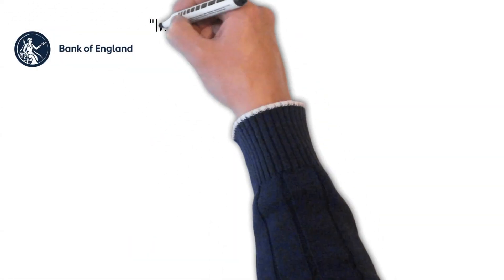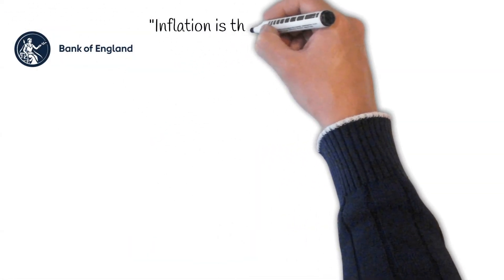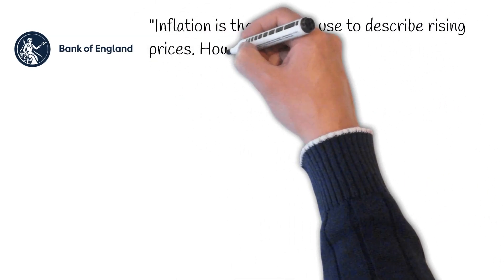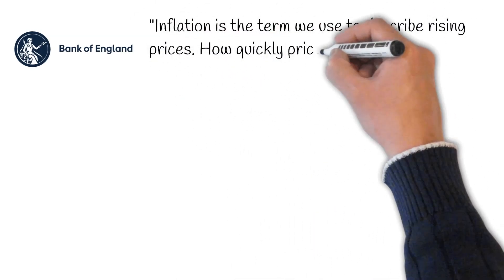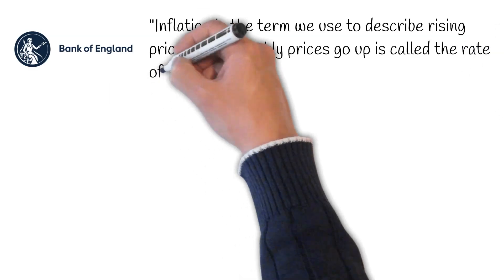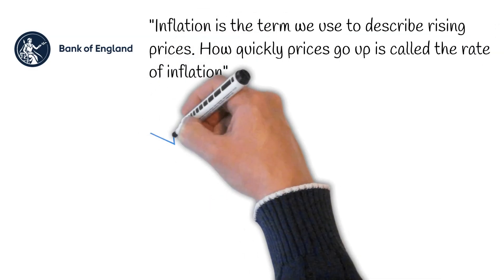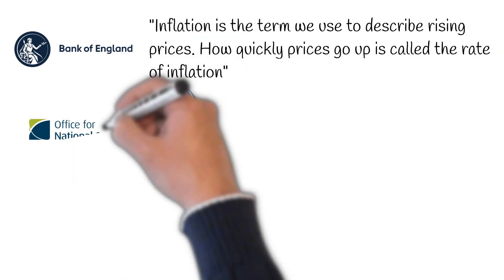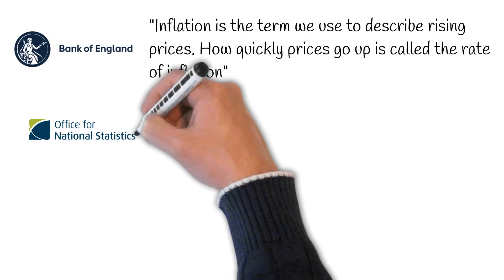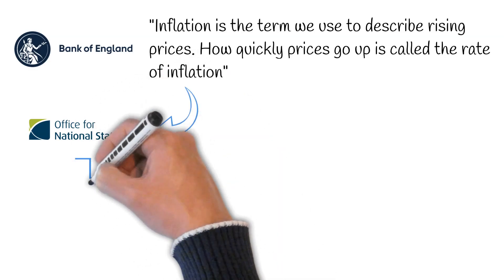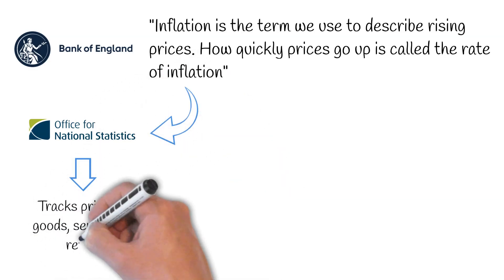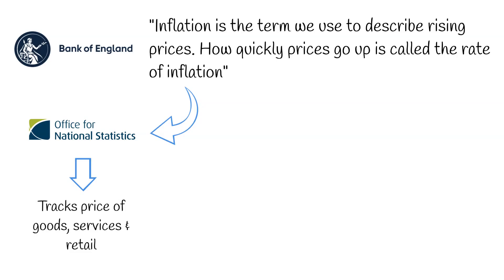The Bank of England states inflation is the term used to describe rising prices. How quickly prices go up is called the rate of inflation. But how do we measure the rate of inflation? The Office for National Statistics, or ONS for short, tracks prices of goods, services, and retail in order to determine the rate of inflation.